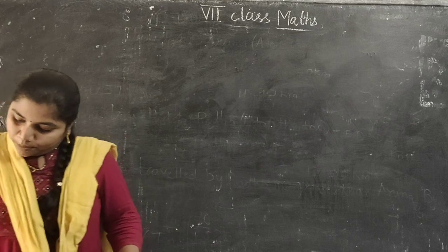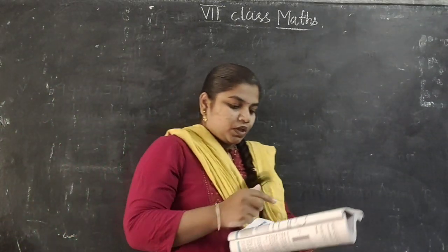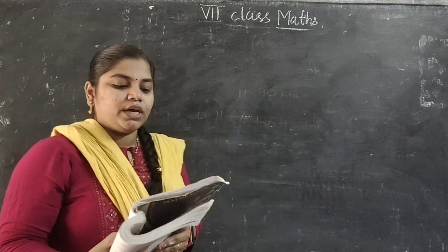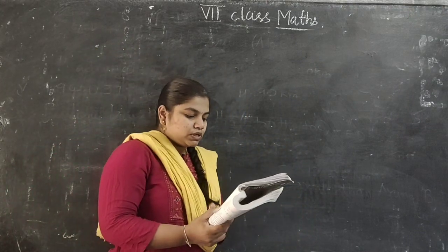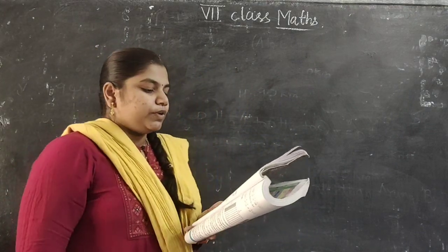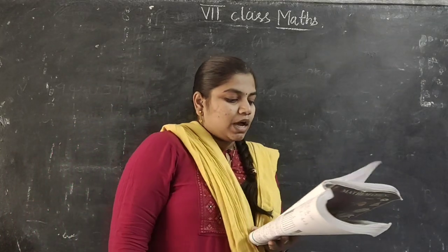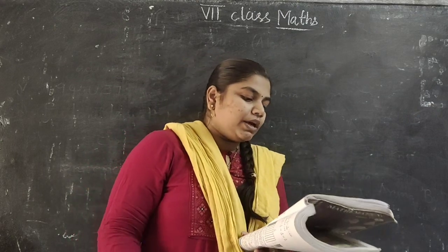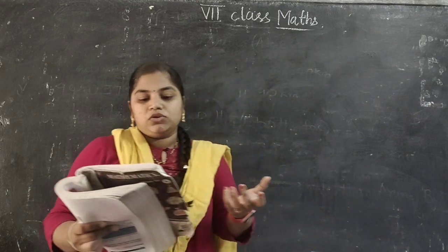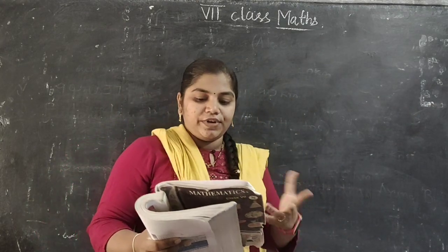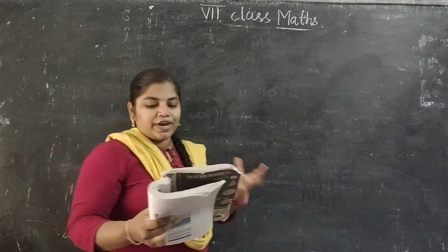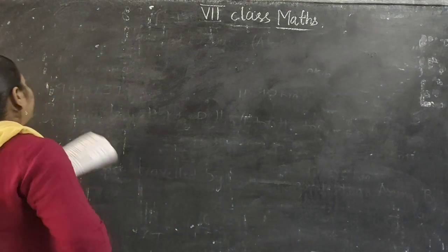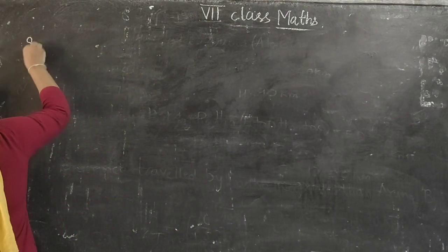Upendra went to market to buy vegetables. He bought 2 kg 250 grams of tomatoes, 2 kg 500 grams of potatoes, 750 grams of lady's finger, and 125 grams of green chilies. How much total weight did Upendra carry back to his house? We have to find the total weight.